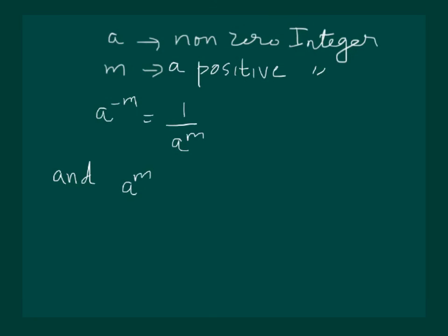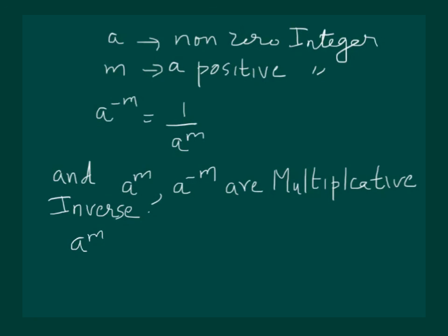And a to the power m comma a to the power minus m are multiplicative inverse. That means if we multiply a power m with a power minus m, we will get a power m multiplied by 1 by a power m and which will get cancelled. Hence, we will get 1. So, we can say that a power m and a power minus m are multiplicative inverse.